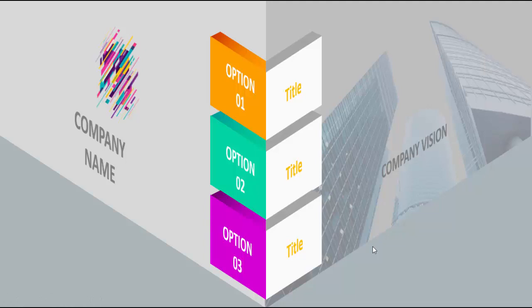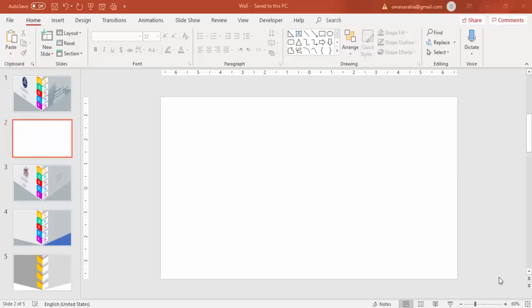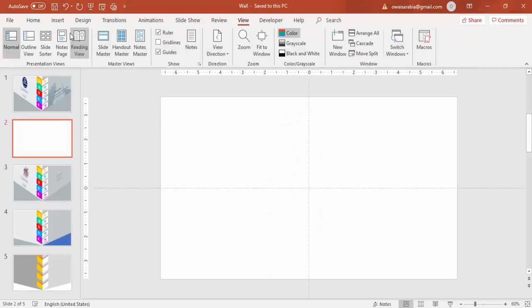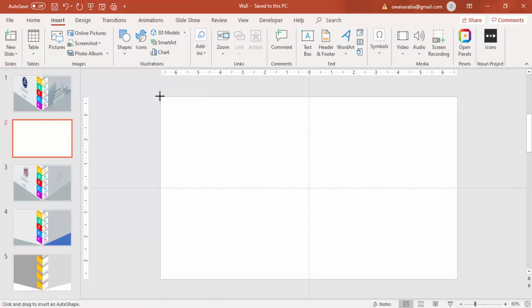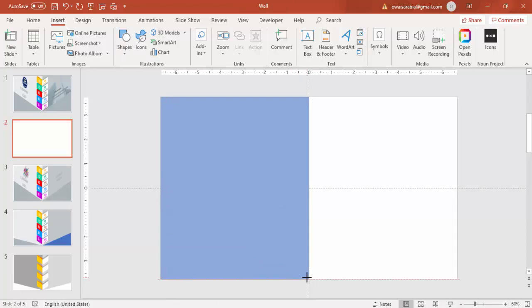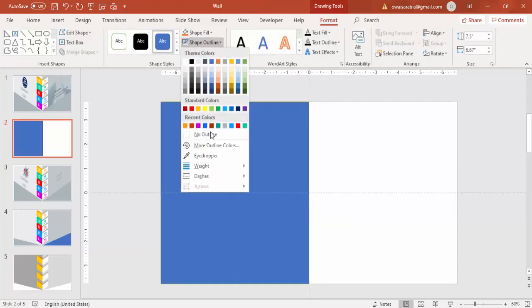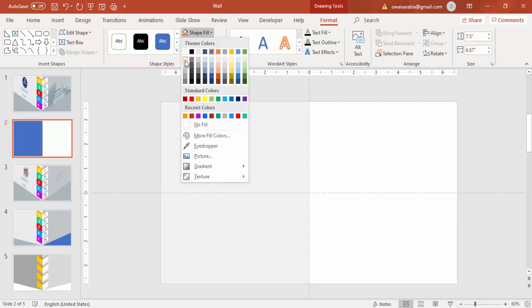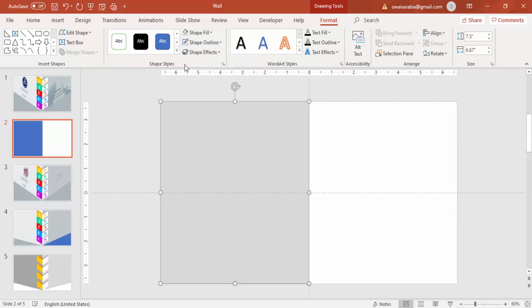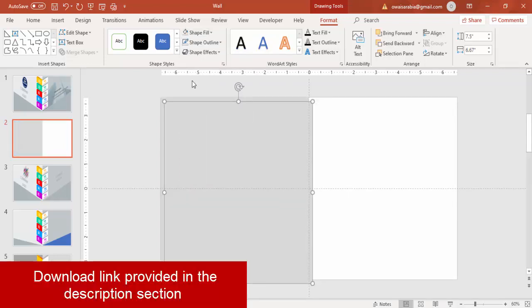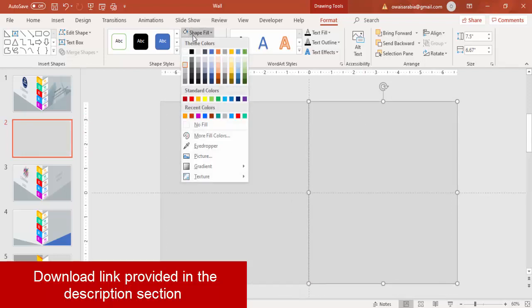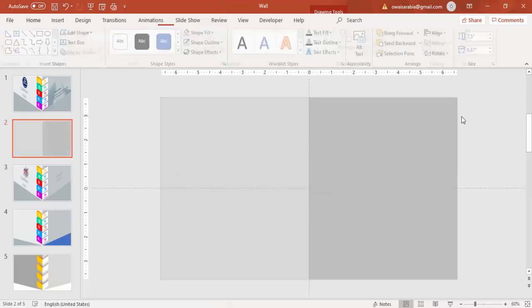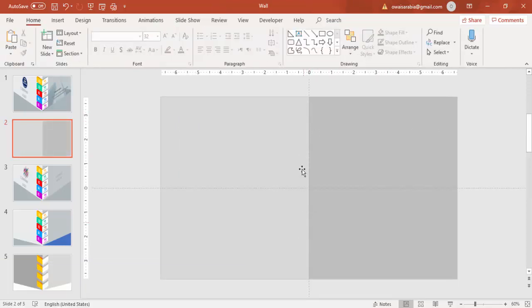Let's see how to create this beautiful infographic slide in PowerPoint. Add a new slide, go to View and enable the guides. Go to Insert, Shapes, select a rectangle and draw the rectangle covering half of the slide. Make it no outline and give it a light gray color, then press Ctrl+D to duplicate it to the other side of the slide and give it a somewhat darker color. Make sure that this is aligned properly.